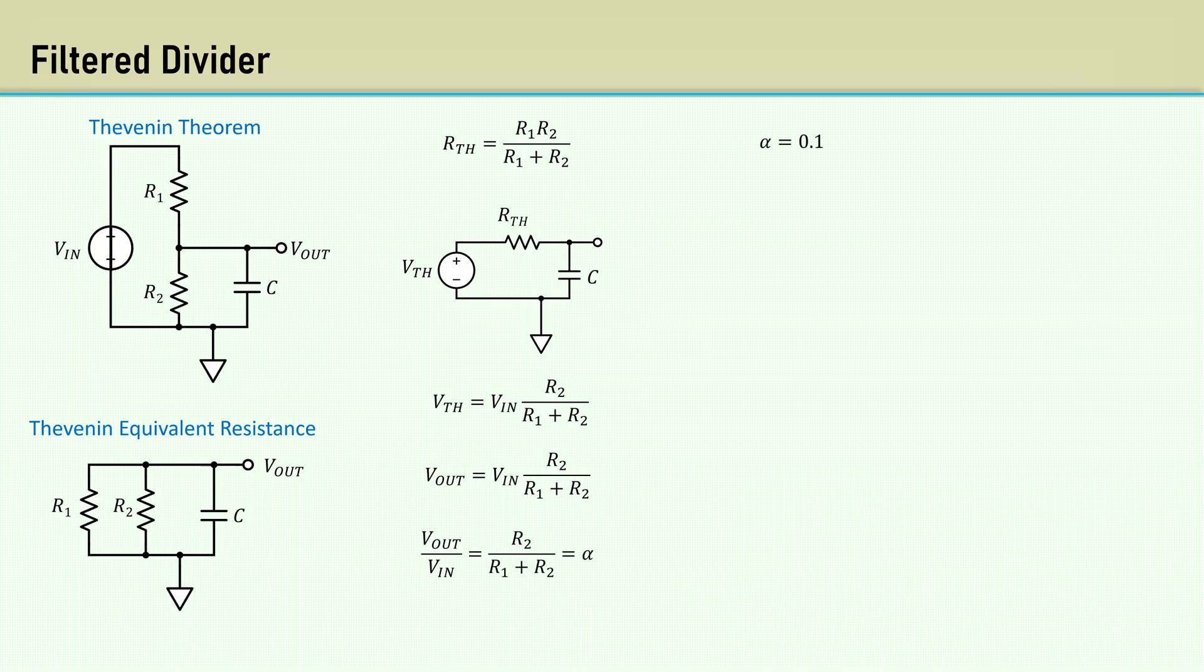Let's make the alpha 0.1. We can let R1 be 90k and R2 be 10k. Our Thevenin comes out to 9k.